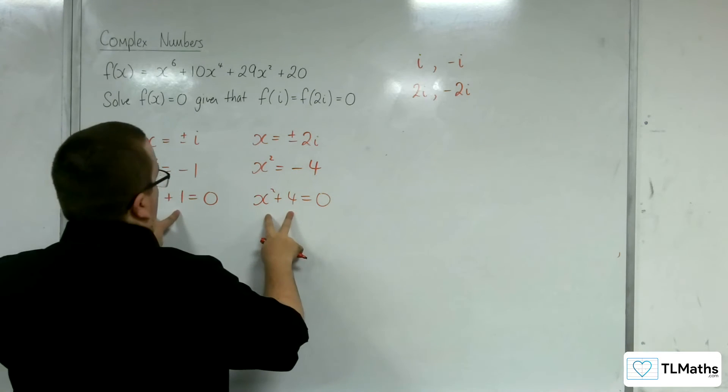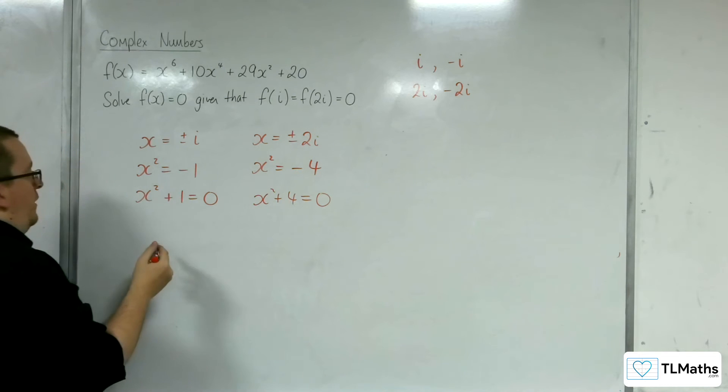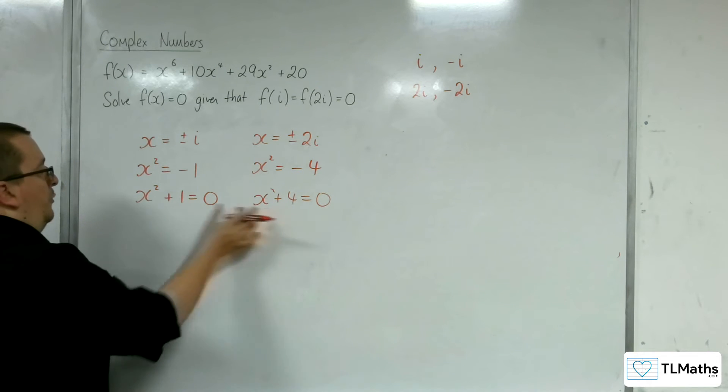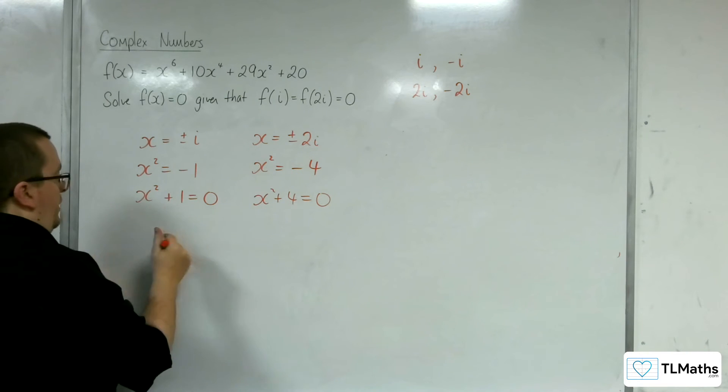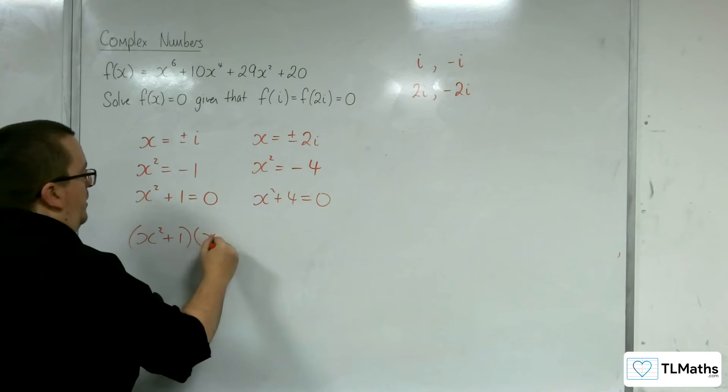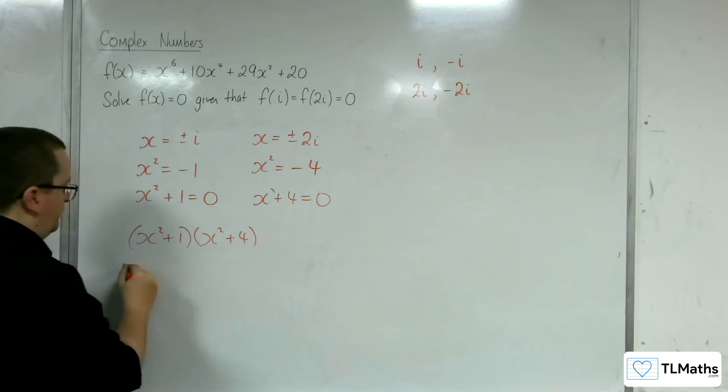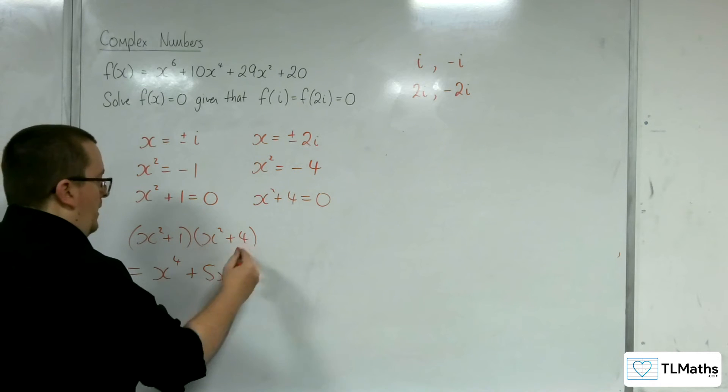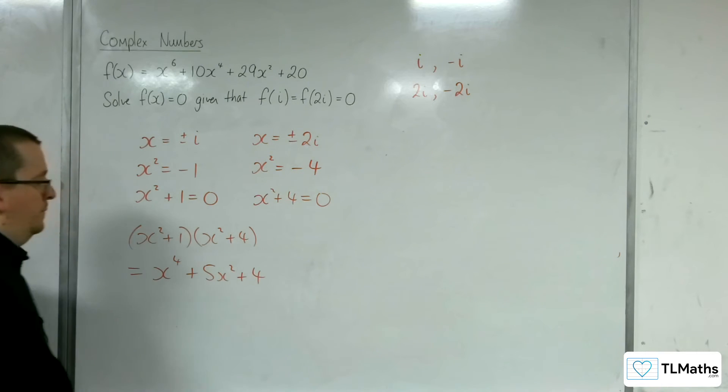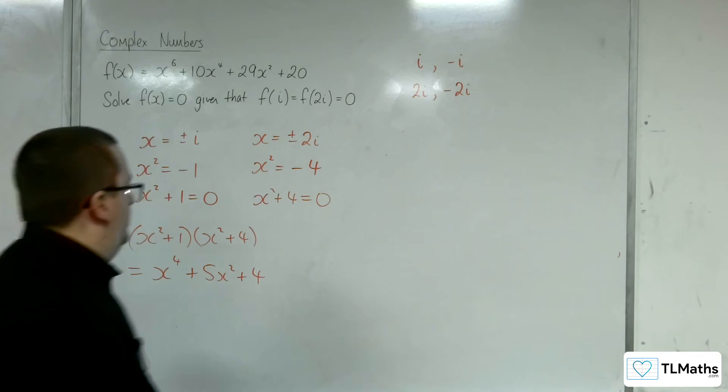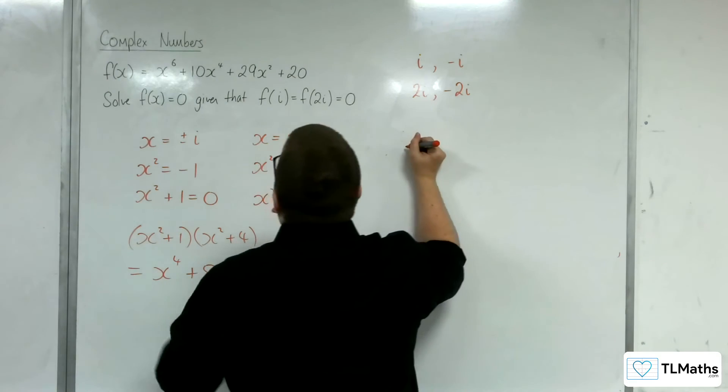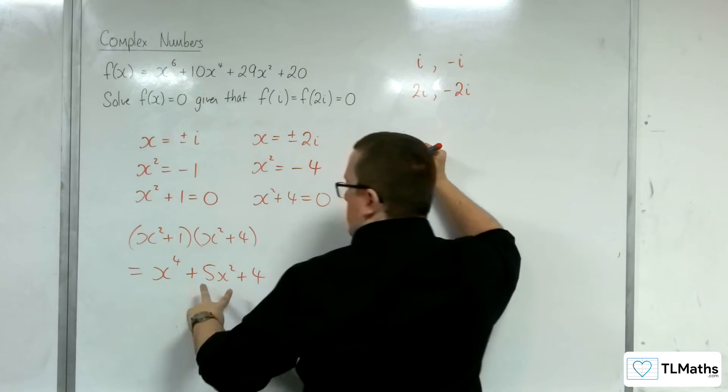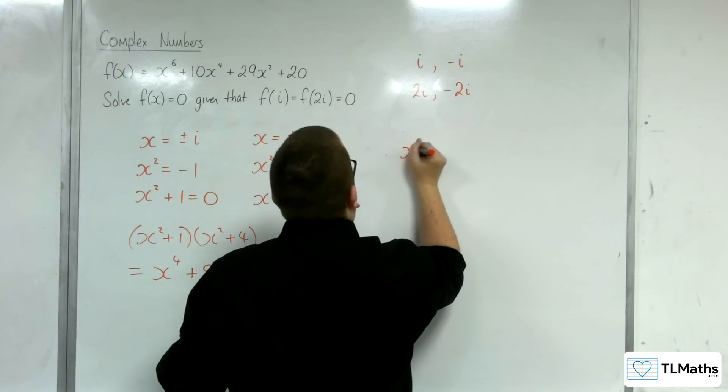If I know that both of these are factors, then I could use polynomial division by dividing by the product of those two, just as I did in the previous video. So x squared plus 1 times x squared plus 4 gets us x to the 4 plus 5x squared plus 4. So I want to divide this by this.